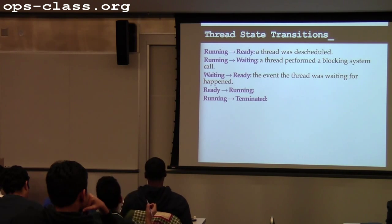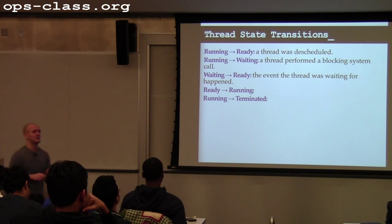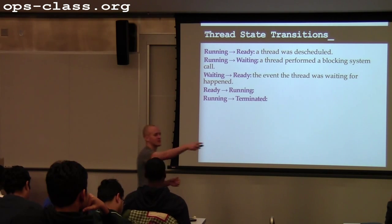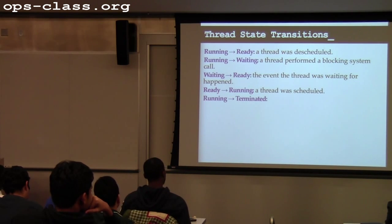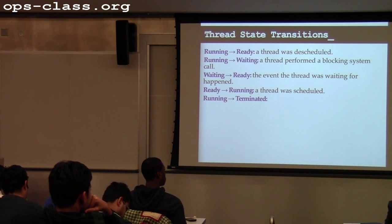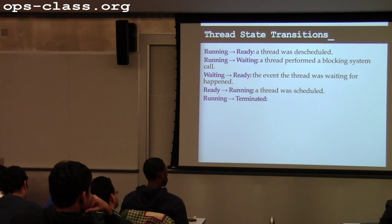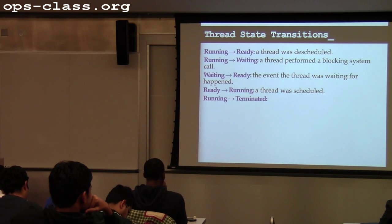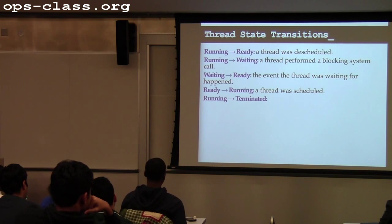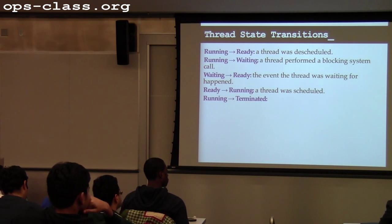What about ready to running? The operating system chose me to run — this is called being scheduled. It said the time has come, you've been on the ready queue and I've decided to schedule you. Scheduling policy is looking at the ready queue and deciding what thread or threads — if you're on a multi-core system — to run.